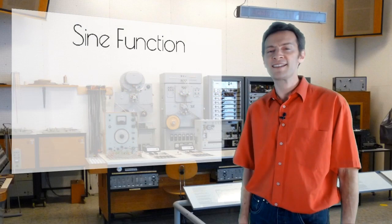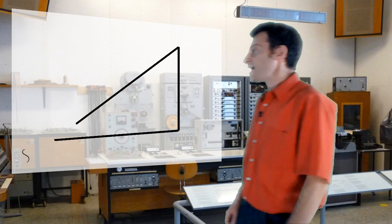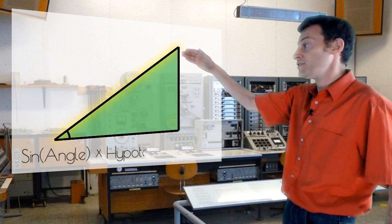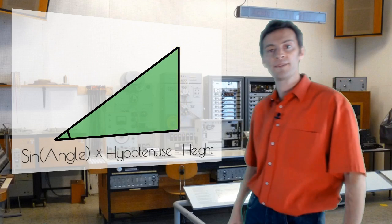You may remember the sine function from your school days as having something to do with the angles of triangles. If you take the sine of this angle here, and multiply it by the length of the hypotenuse, you can calculate the height of the triangle's apex.